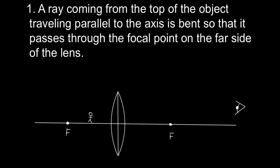Here's our little man, and here's the camera or eye looking through the magnifying glass. This is our converging lens with the focal point marked on each side. Applying rule one: a ray from the top of the little man's head travels parallel to the axis, and is bent at the lens so that it passes through the focal point on the far side. That's ray number one.